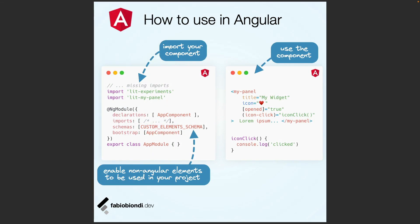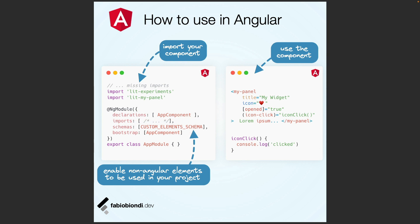In Angular, we need to import our Web Component and enable the custom element schema in order to use non-Angular components in our project. Finally, we can use the Web Component in our templates as a normal Angular component. We can set all the attributes as we do with input properties by using square brackets to pass dynamic data, pass the content or slot as we usually do, and listen to events by using round brackets.